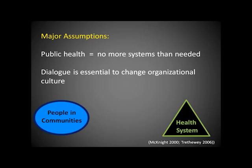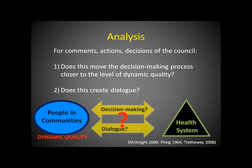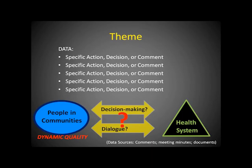These personnel and organizational changes had effects on conversations in council meetings and on communication between the council and UAMS. The theme drawn from this last part of the story was communication — what were the expectations about how people communicate in the council process, and how was dialogue created or constrained? Now let's discuss how the model of dynamic quality described earlier was applied to the data collected. Two major assumptions of the model: public health results when communities solve their health-related problems locally with the least amount of system power possible, and dialogue between people in communities and people in the health system is essential to changing the organizational culture.